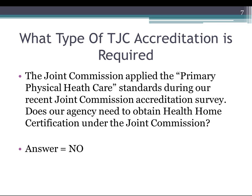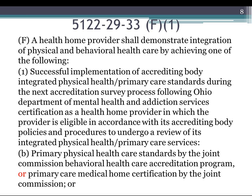There was a question about Joint Commission accreditation that might be required under the health home rule — an agency asked whether, when the Joint Commission applied primary physical health care standards during their survey, they had to receive health home. The answer is no. The rule relates to either the primary physical health care accreditation or a primary care medical home certification by the Joint Commission. According to Joint Commission standards, the certification is optional. If an organization is providing primary physical health care, the Joint Commission will review standards under accreditation — just for the primary physical health care standards, not the primary care medical home certification.